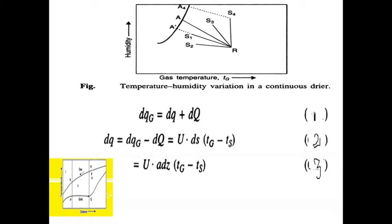The solid temperature is capital A or A-dash. Capital A corresponds to point Q, and capital A-dash corresponds to point P — refer the yellow color boxes in the figure. If heat losses are present, the path would be RS2. If heat is added within the dryer, the path would be RS3. The path will be RS4 if the gas temperature is kept constant, and the solid temperature equals A4.